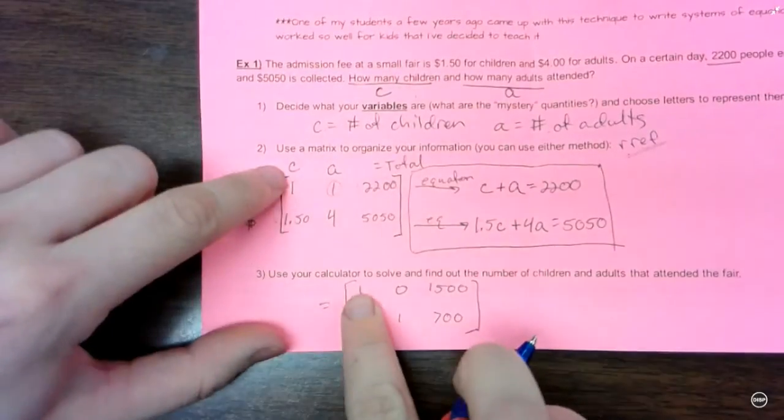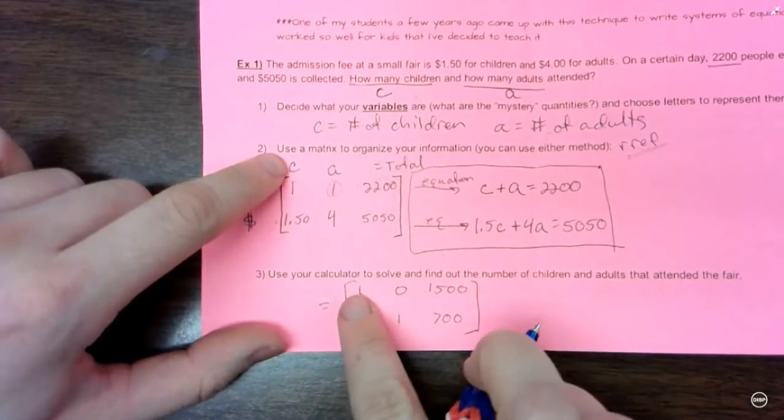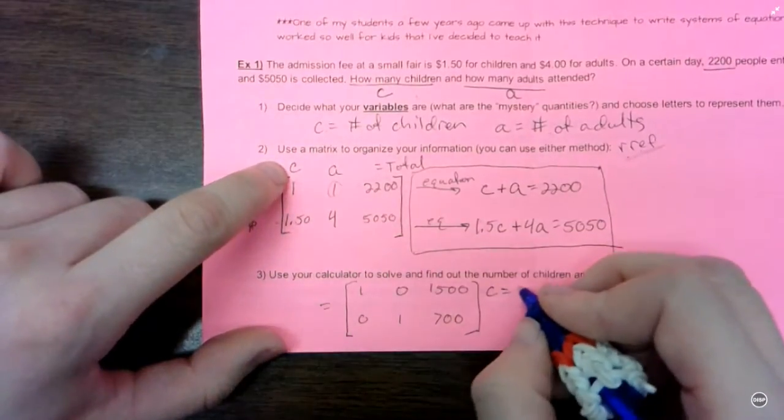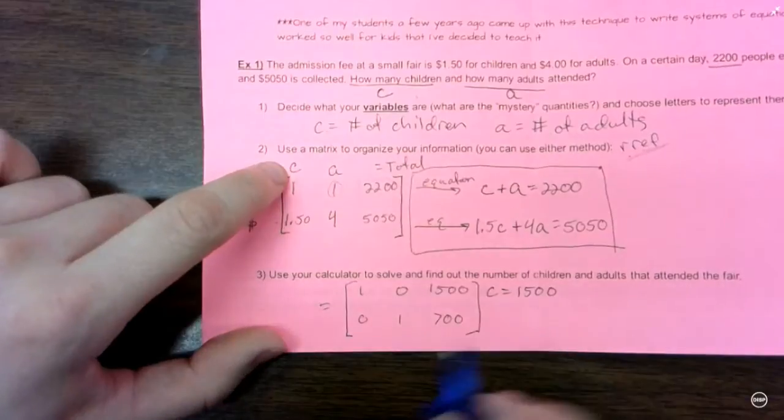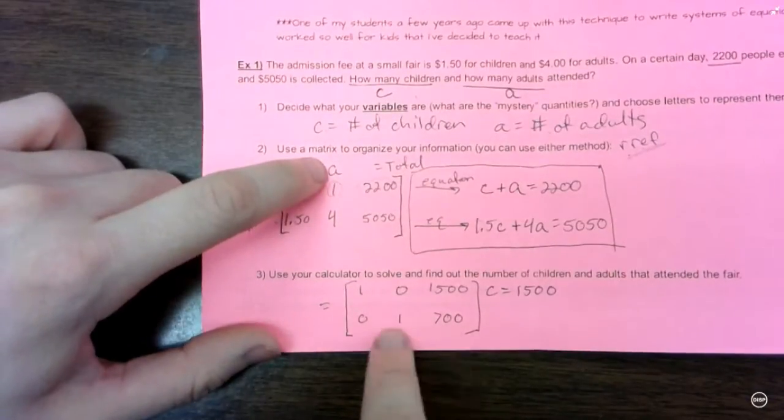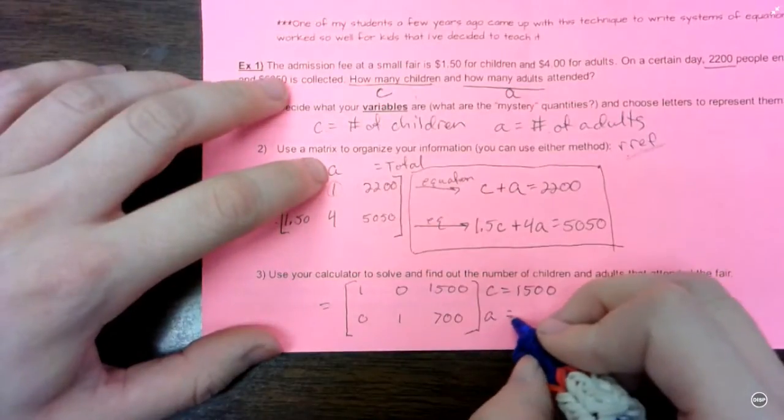And this is number of children, because that's where the 1 is in the matrix. Remember, that's what that represents. So number of children is 1,500. And look for that 1 in the adult column. So that means the number of adults is 700.